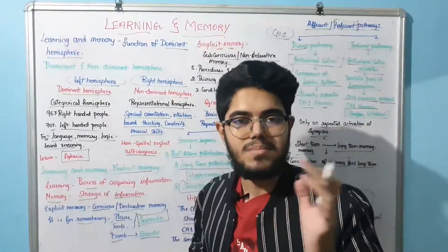Implicit memory is subconscious memory, also called non-declarative memory. It involves procedures and skill memory — controlled by the basal ganglia and striatum — priming memory, which involves the neocortex, and conditioning memory, controlled by the amygdala and cerebellum.